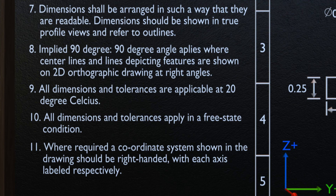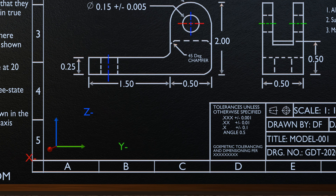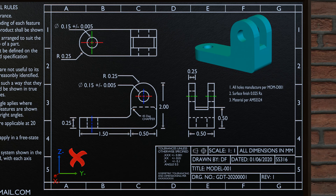The last fundamental rule discussed in this video says where required, a coordinate system shown in the drawing should be right-handed, with each axis labeled respectively. When we look at the coordinate system of this drawing, it is exactly in line with the rule. For a left-handed coordinate system, the positive sign will change to negative and violate this fundamental rule, though there are certain cases which need a left-handed coordinate system. Suggestions are most welcome. With this, we come to the end of this video.